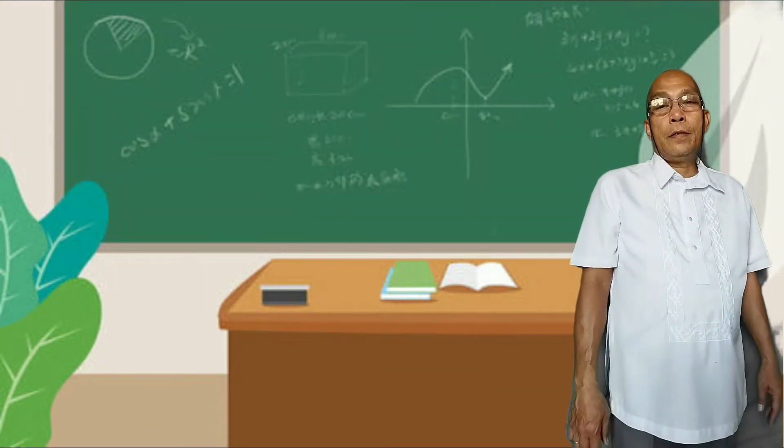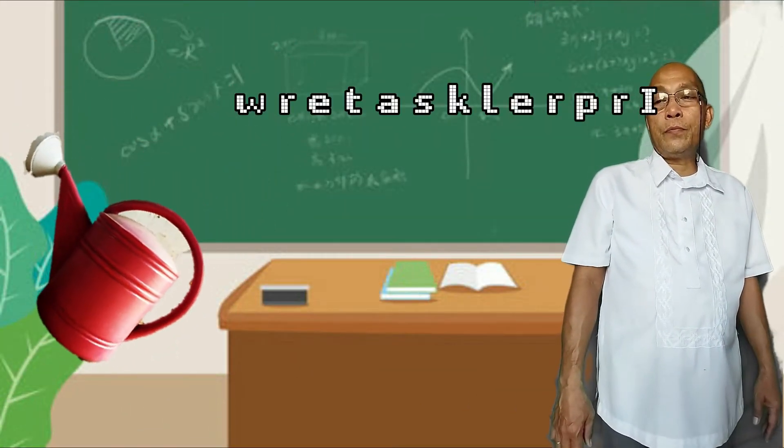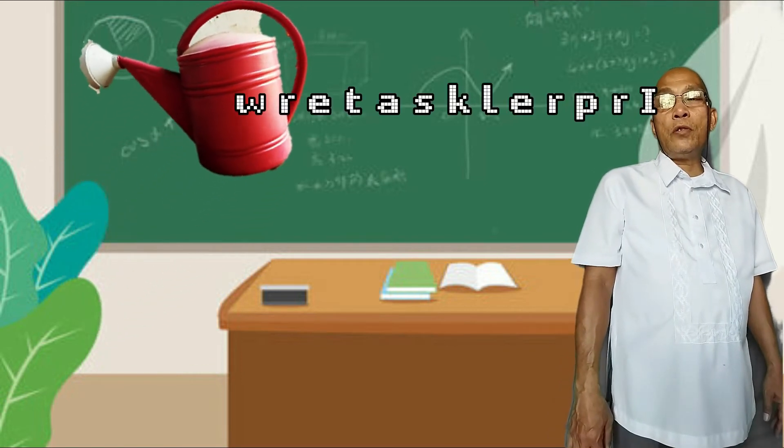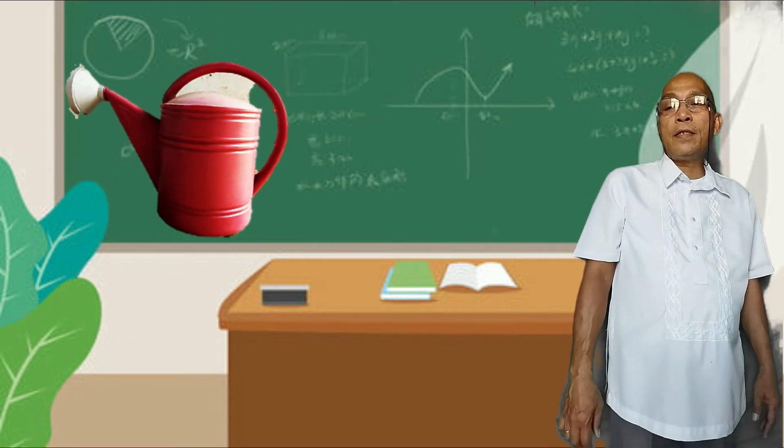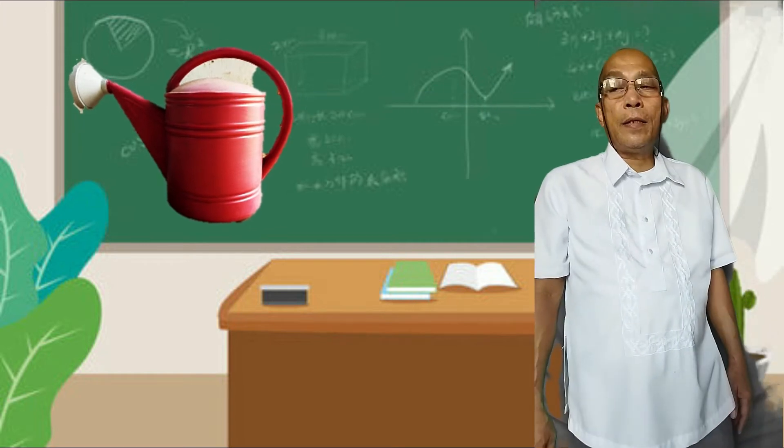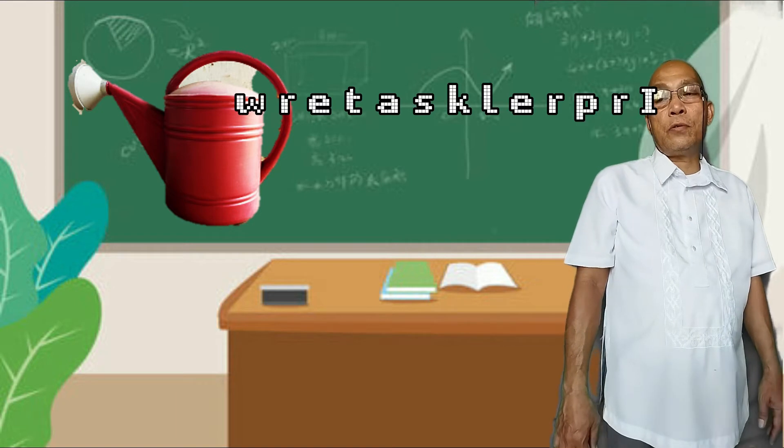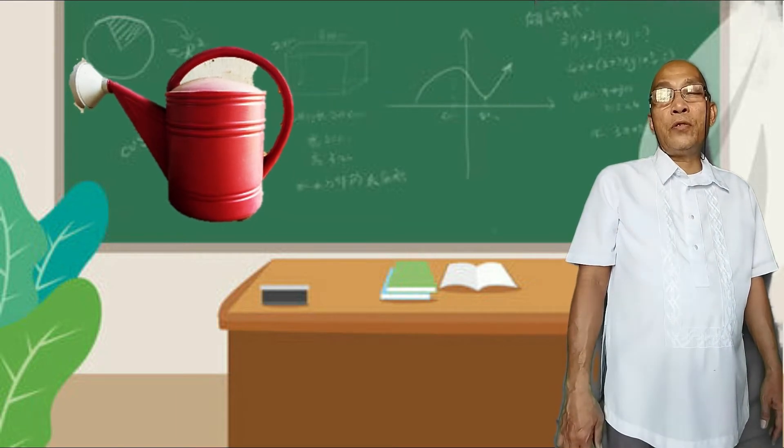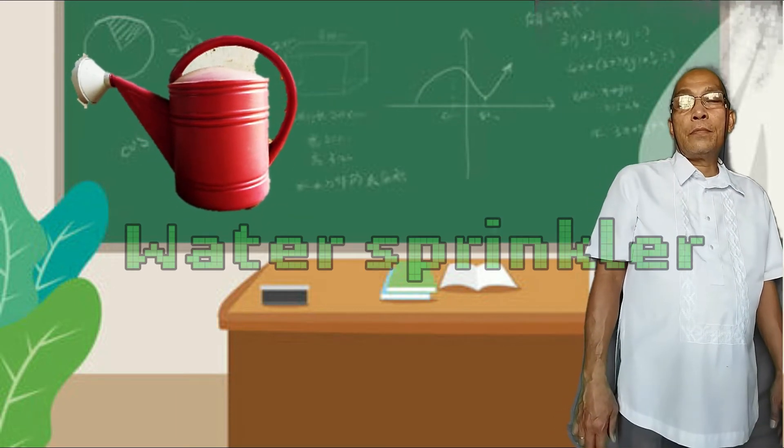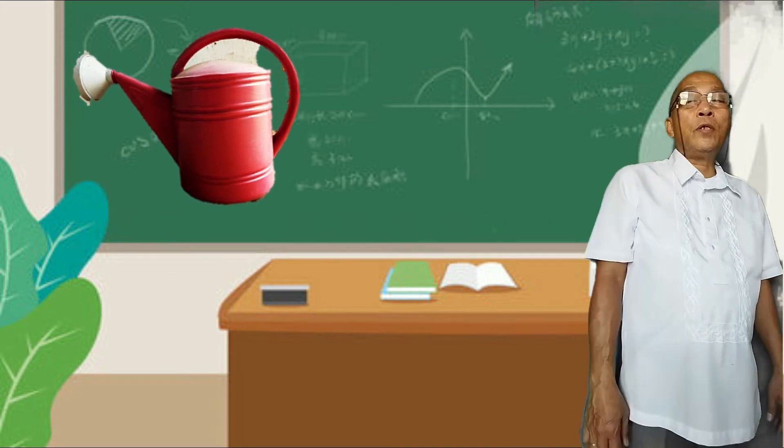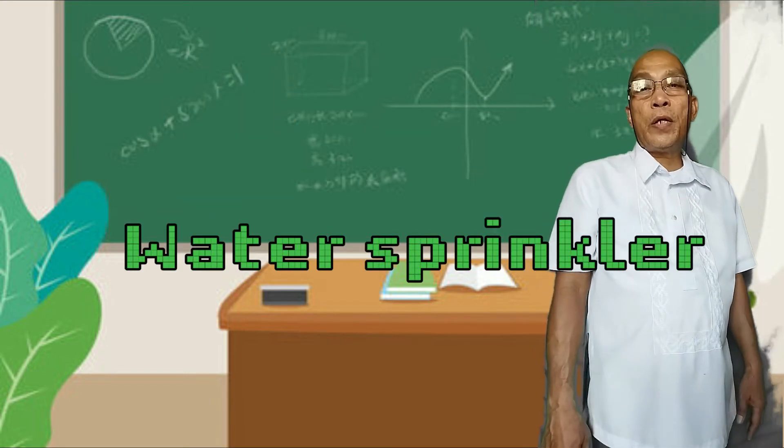Take a look at this picture. The letters are O-W-R-E-T-A-S-K-L-E-R-P-R-L. What do you call it? It is composed of two words. Correct. The word is water sprinkler.